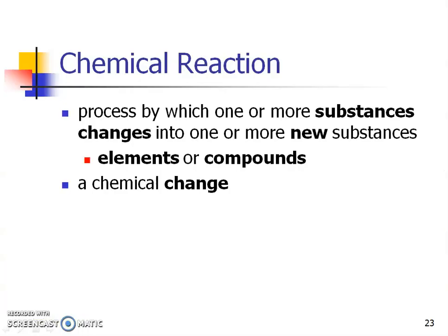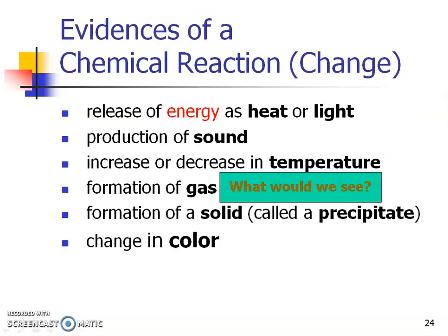Chemical reaction is just that process where one or more substances changes into new substances. It can be elements to compounds, compounds to compounds, compounds to elements, and it could be a variety of different elements and compounds. That chemical reaction is also a chemical change. Our chemical equation is how we're going to visualize that reaction changing.